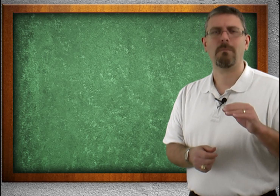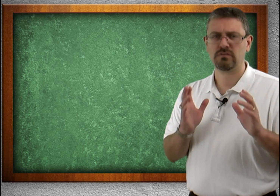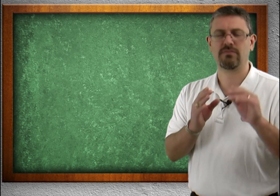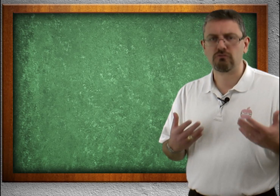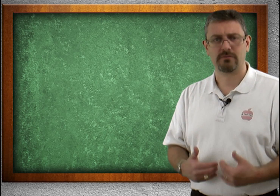Moving on, let's talk about how muscles are named. This is not an all-inclusive list, but it will hopefully help you identify some of the muscles out there. Muscles are typically identified by location — for example, all the pectoralis muscles are in the pectoral region. We also have the number of muscle heads — for example, biceps: bi means two; triceps: tri means three.